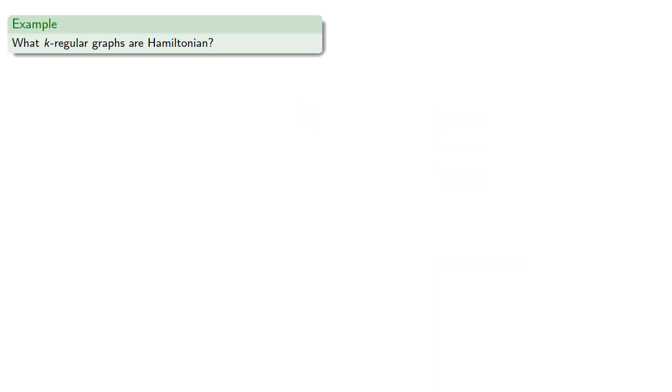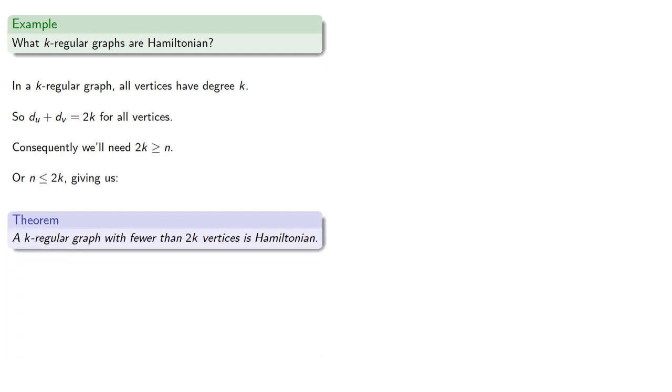And as a quick example of how we might use this, we might try to find what k-regular graphs are Hamiltonian. In a k-regular graph, all vertices have degree k, so the degree sum will be 2k for all vertices. Consequently, we'll need 2k to be greater than or equal to n, the number of vertices. Or n is less than or equal to 2k, giving us: a k-regular graph with fewer than 2k vertices is Hamiltonian. For example, cubic 3-regular graphs with up to 6 vertices are definitely Hamiltonian.